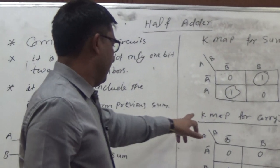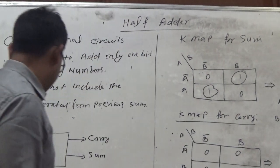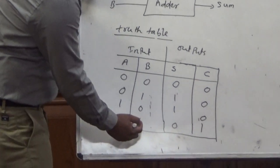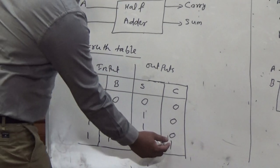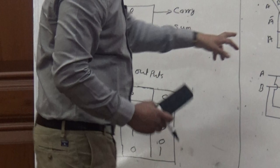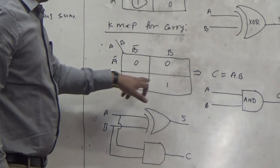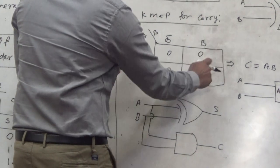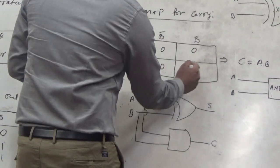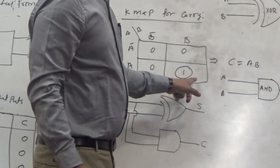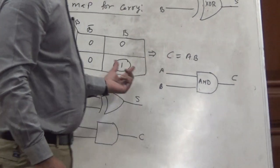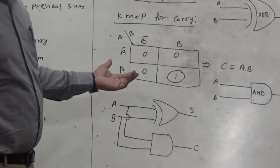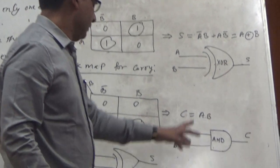Now, next is K-map for the carry. For all the cells excluding where A and B both are high, you get the carry. For the remaining cells, the value will remain 0, 0, 0, 0. But in this cell, A is high from this side, B is high from this side. It means the carry will be here, the carry components will be here. C equals A dot B. No other cell is high.